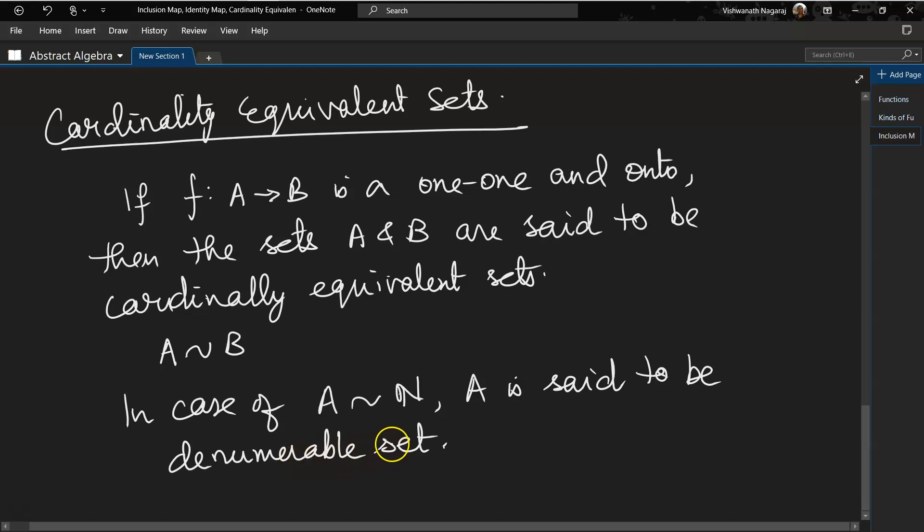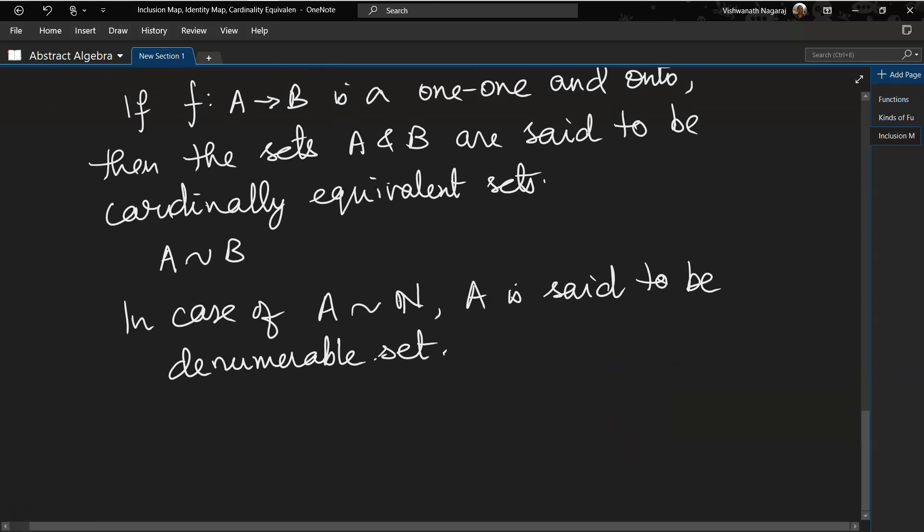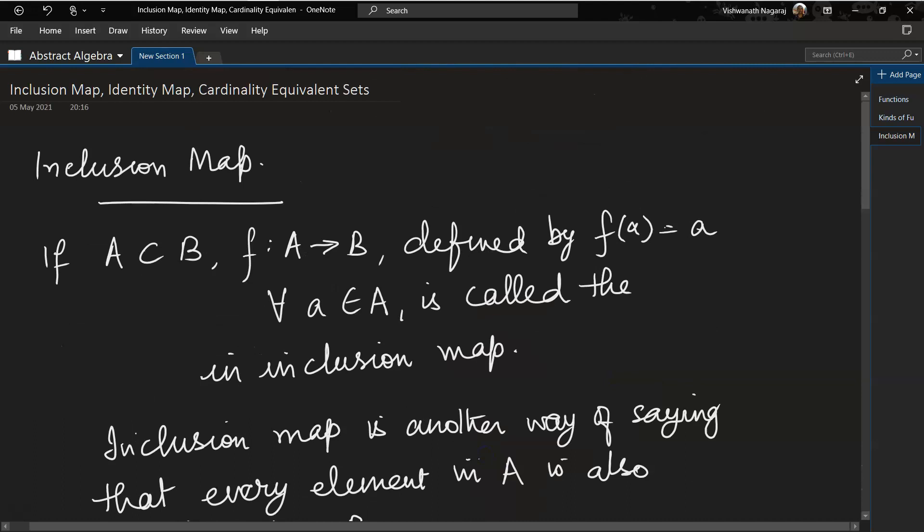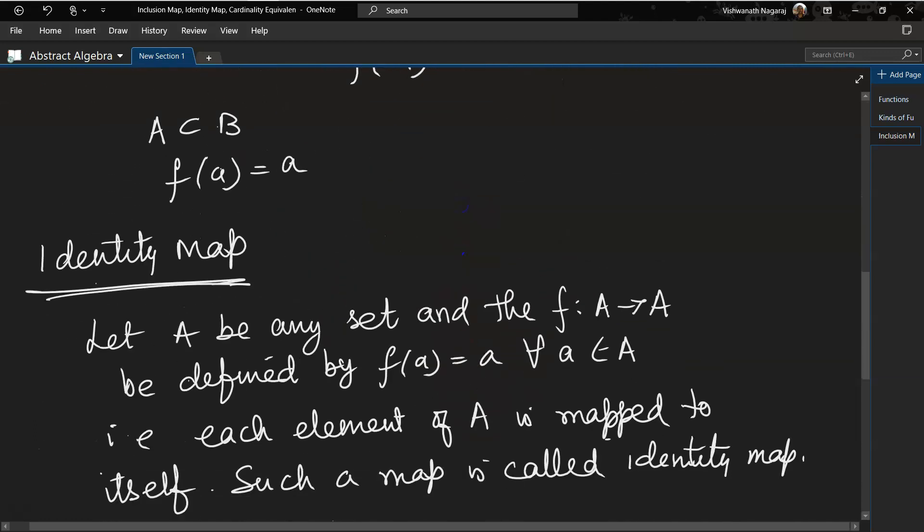Denumerable means that the elements of set A can be counted corresponding to the natural numbers. So for natural number 1 there is a corresponding element in A, for 2 there is one, for 3 there is one, for 4 there is one. So this is a denumerable set. So be clear about inclusion map, identity map,